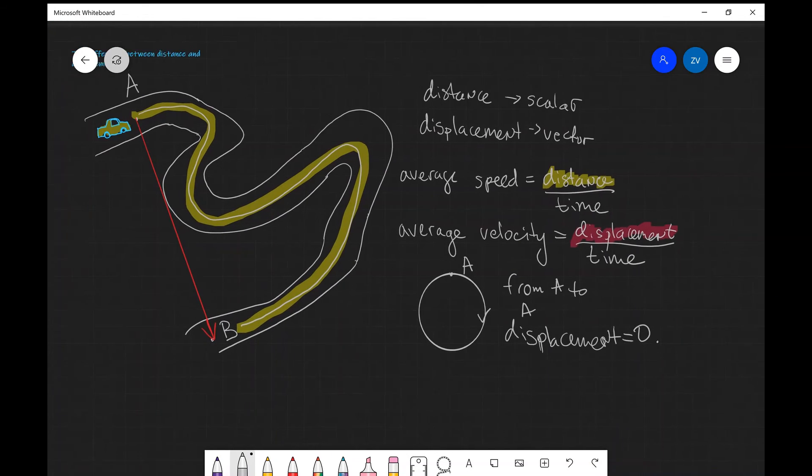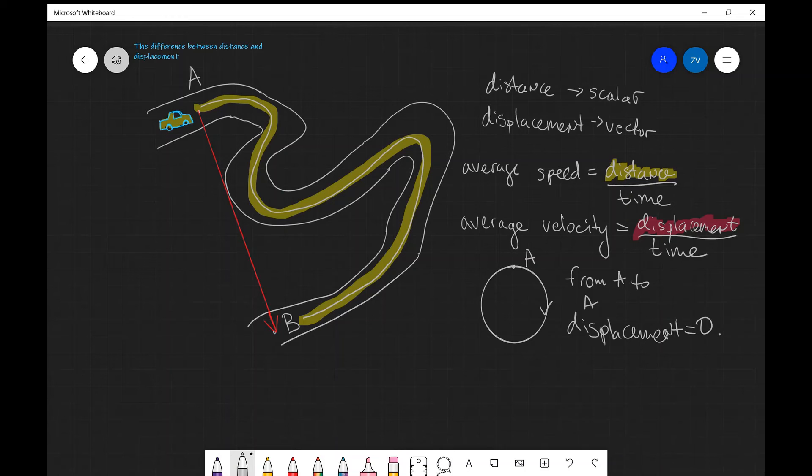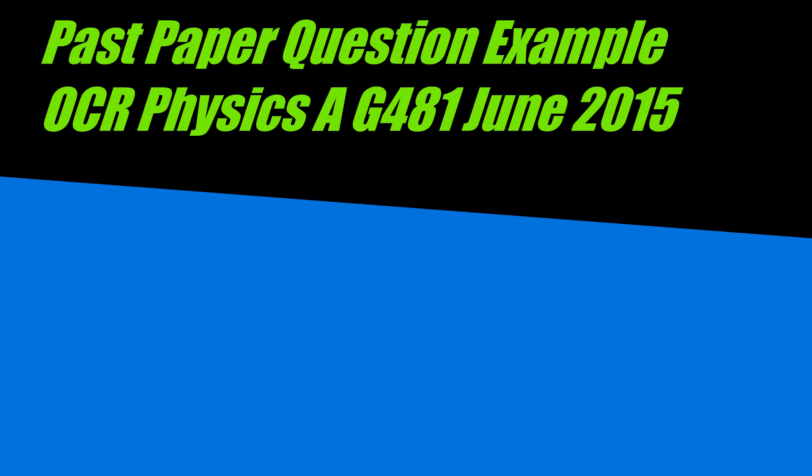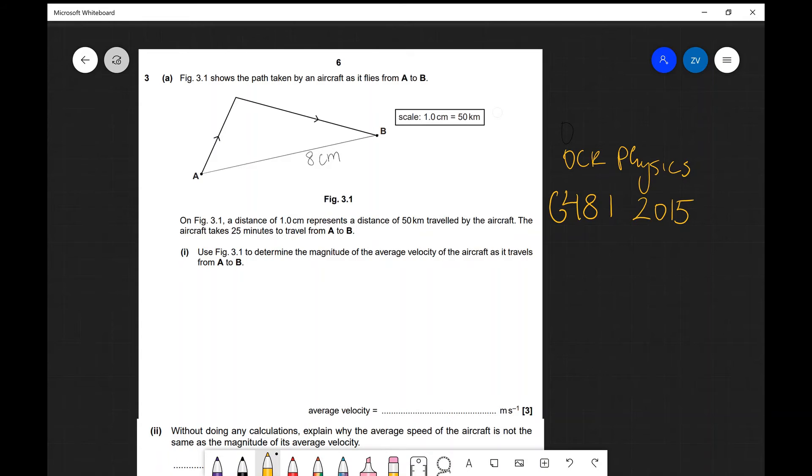Okay guys so let's apply what we've learned to a past paper question. Figure 3.1 shows the path taken by an aircraft as it flies from A to B. A distance of one centimeter represents a distance of 50 kilometers traveled by the aircraft. Use the figure to determine the magnitude of the average velocity as it travels from A to B.